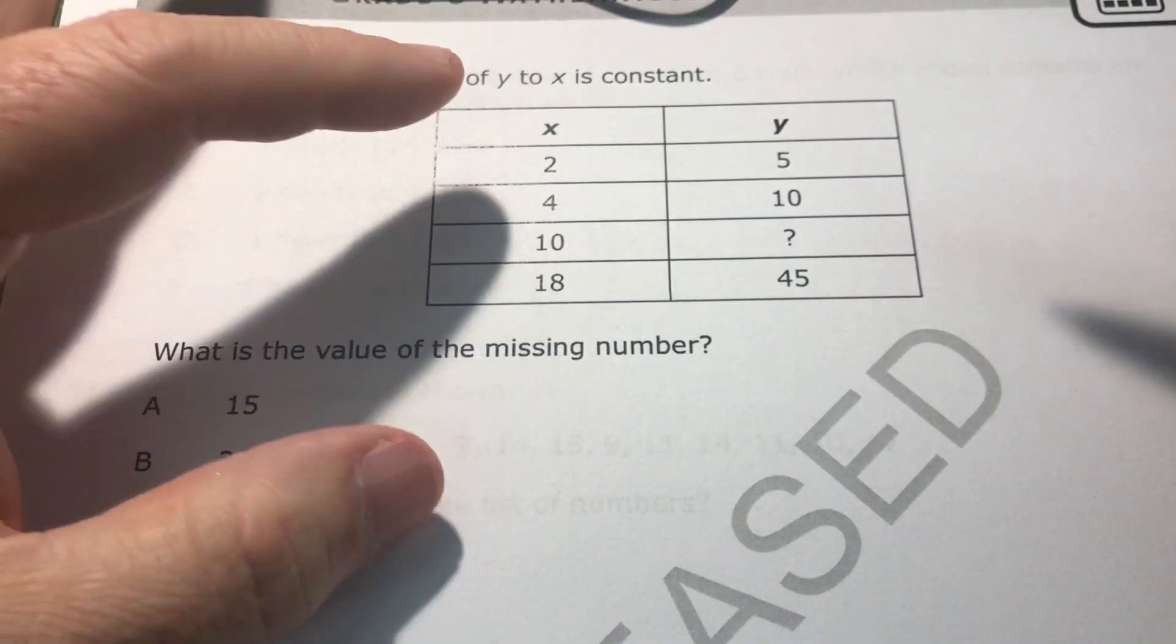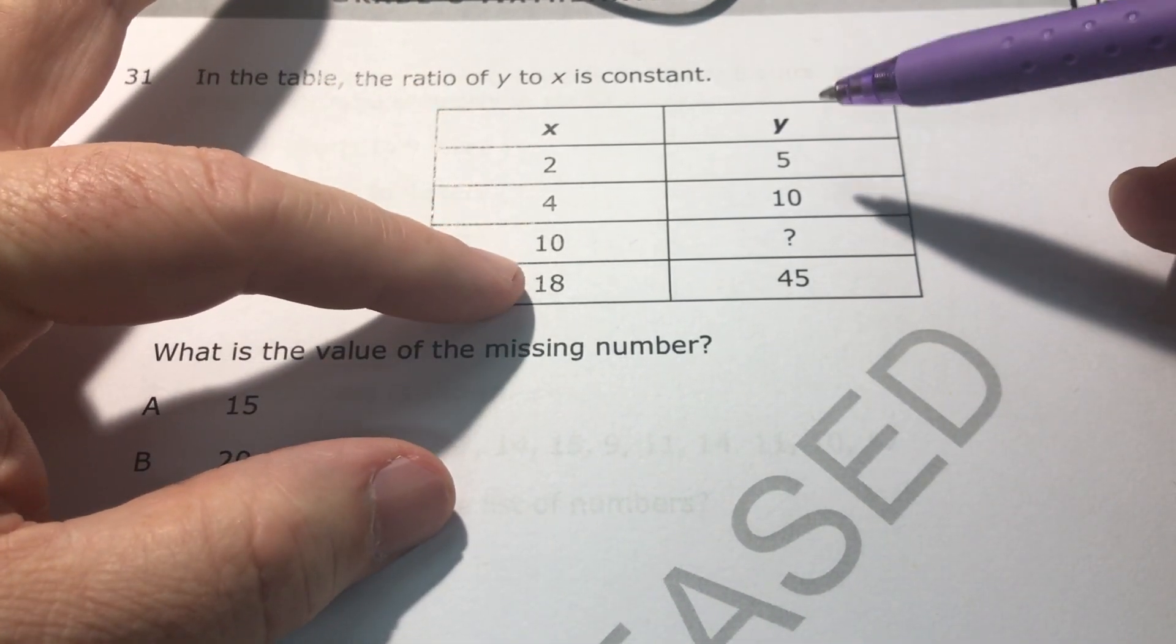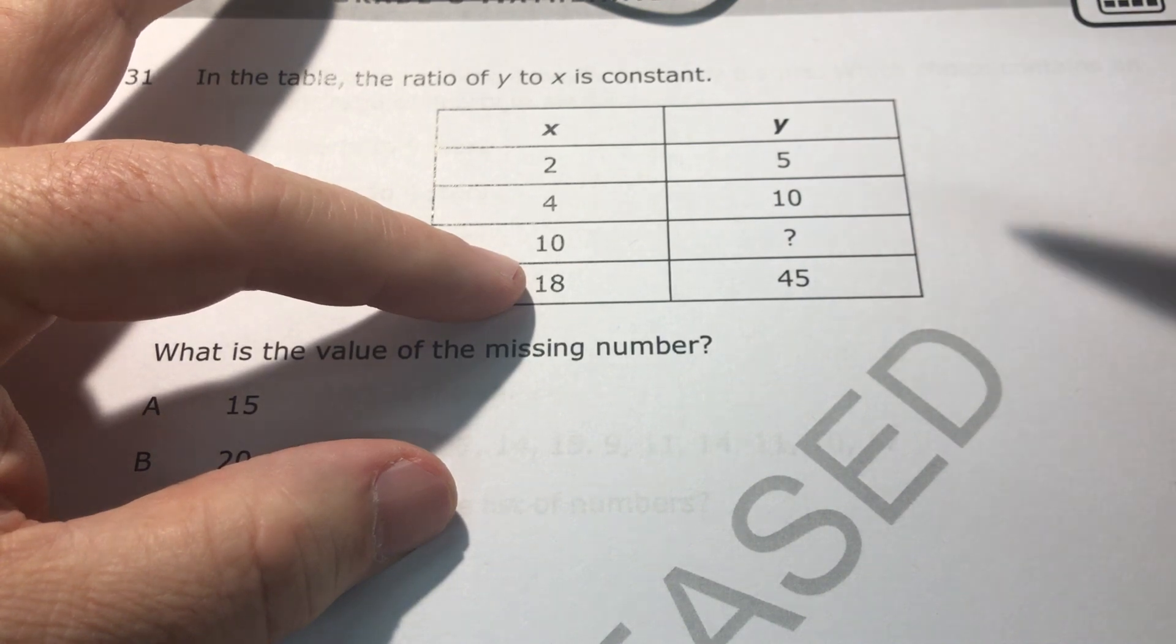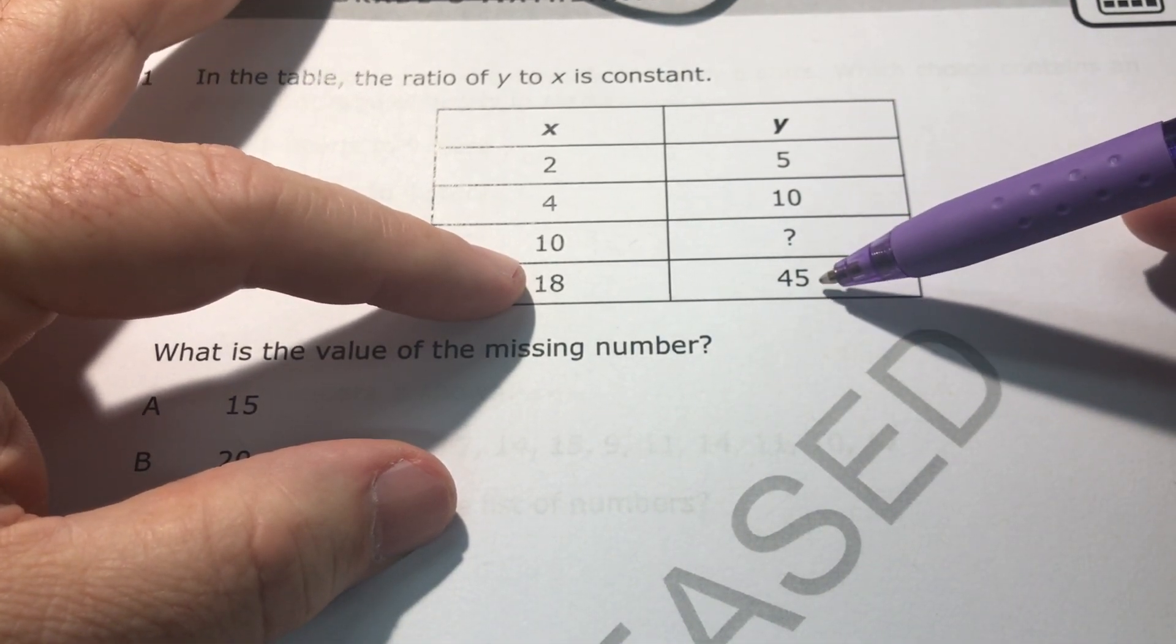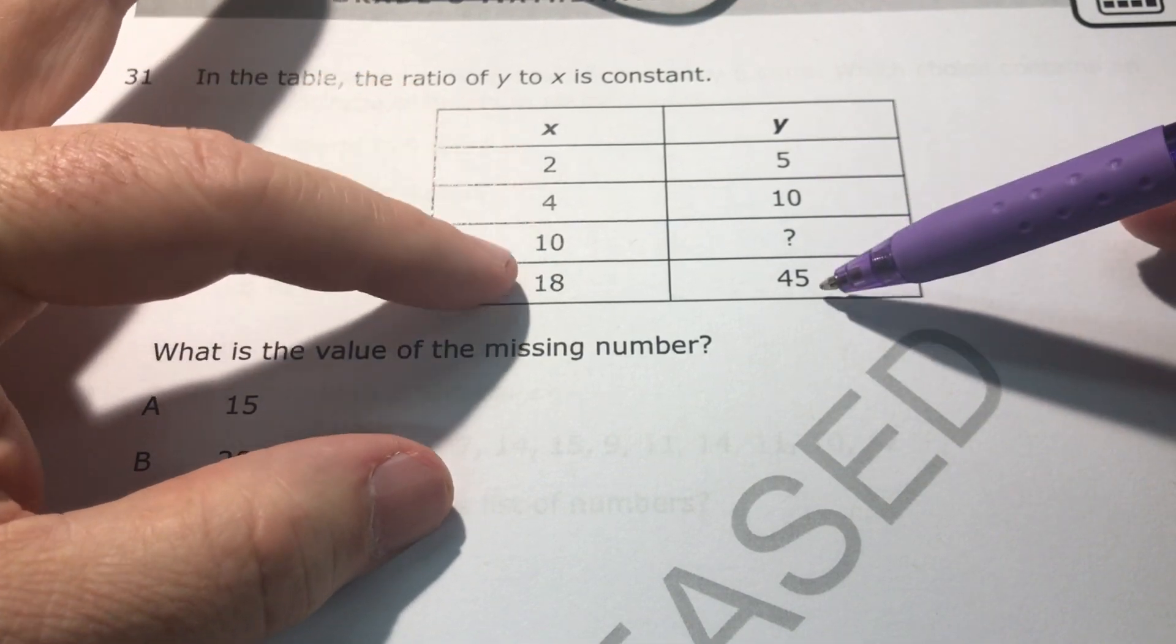Let's make sure about this. Let's make sure that it's all correct. So two times what gives you eighteen? It's nine. Is nine times five equal to forty-five? Yes. So the relationship's the same for both of these all the way down.